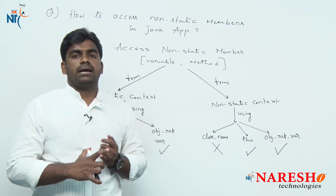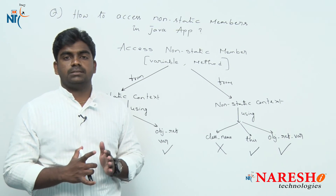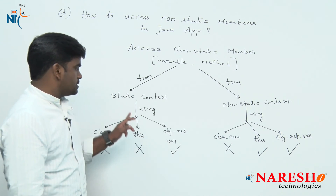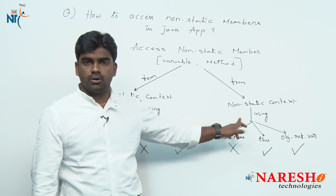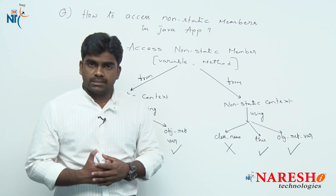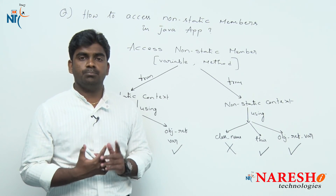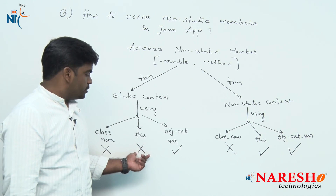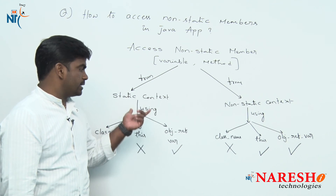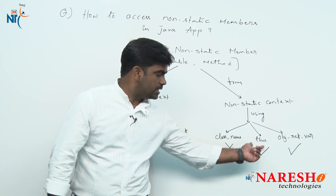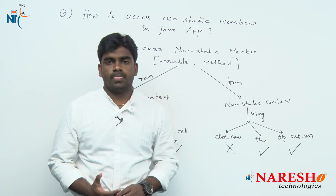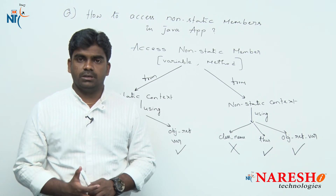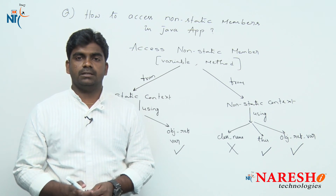In summary: non-static members cannot be accessed using a class name from any context. Using the 'this' keyword is only valid in the non-static area, not in the static area. The object reference variable works from both contexts. That's how to access non-static members in a Java application. For more videos, please subscribe to the Nareshati channel. Thank you.